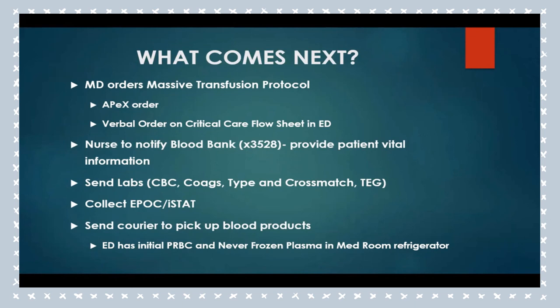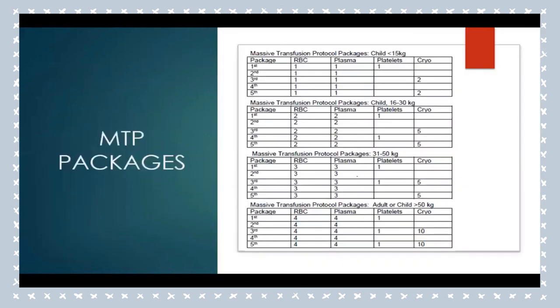For the PICU it is an APEX order; in the ED it is a verbal order on the critical care flow sheet in trauma. The nurse notifies the blood bank, providing the patient's age, weight, MRN and CSN. Send off labs — CBC, coagulation studies, type and crossmatch, and a thromboelastogram. Collect an iSTAT or EPOC. In the ED, a blood refrigerator in the med room has the first packet: two packed cells and one unit of never-frozen plasma. In full traumas, the blood bank comes down with the same.